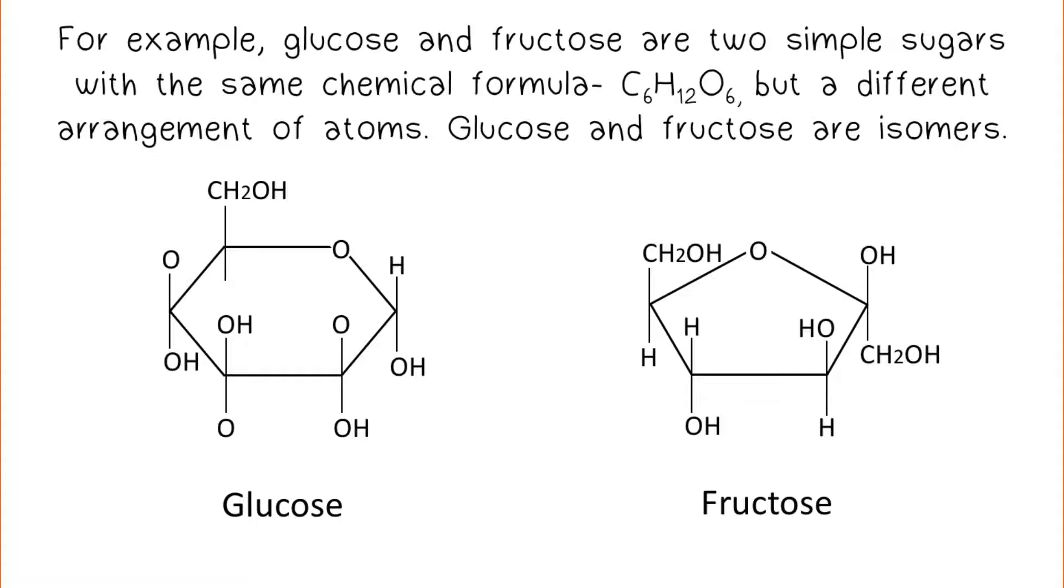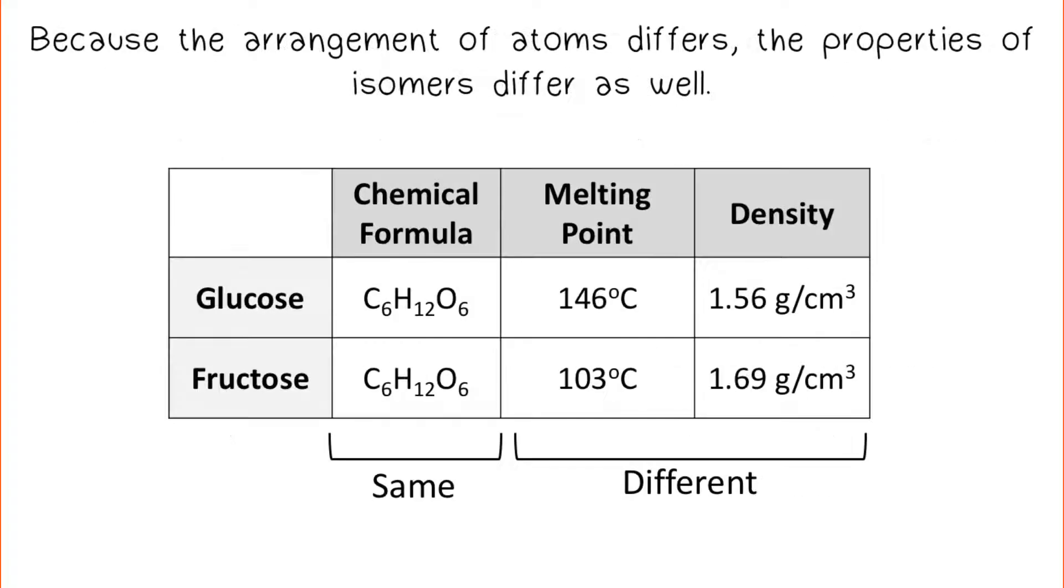For example, glucose and fructose are two simple sugars with the same chemical formula, C6H12O6, but a different arrangement of atoms. Glucose and fructose are isomers. Because the arrangement of atoms differs, the properties of isomers differ as well.